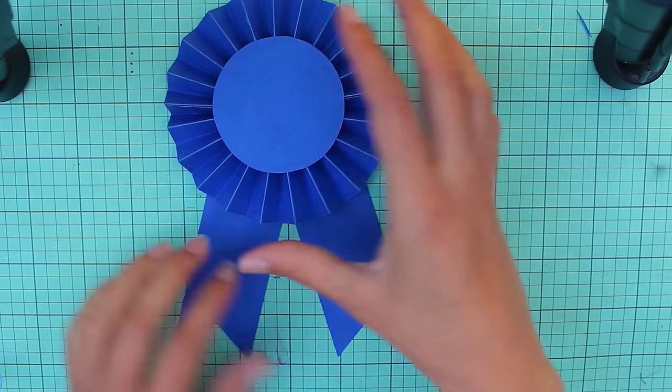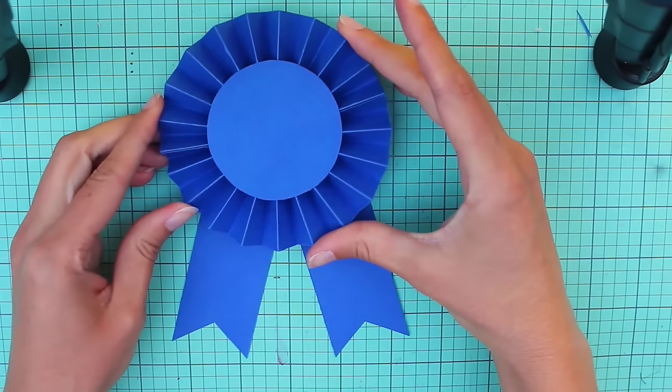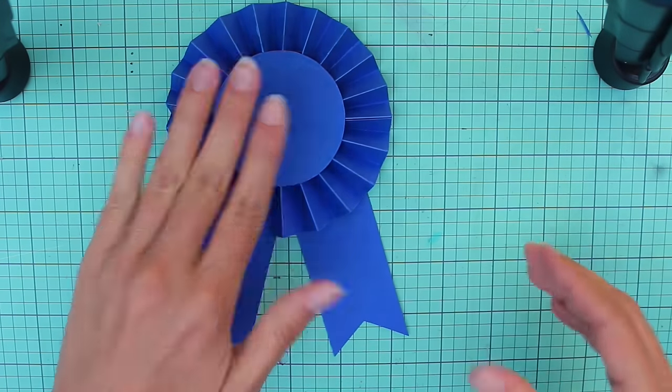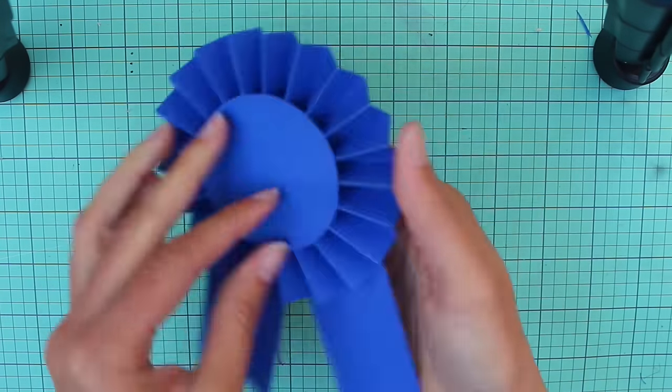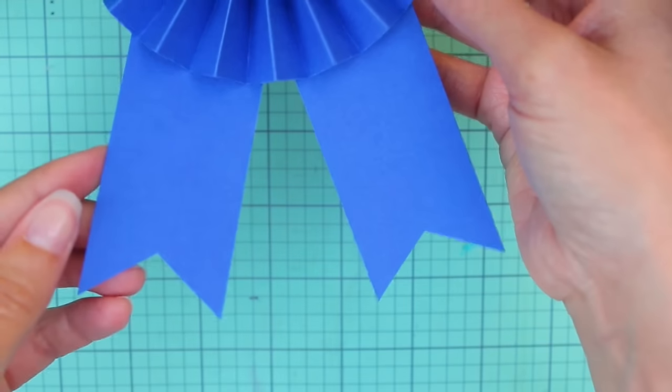Then we'll just be adding this. I'll just put some glue here and then glue that in place. So here is the finished ribbon. Feel free to write something on it like first place or whatever you'd like. There's a lot of different things that you could use these for.